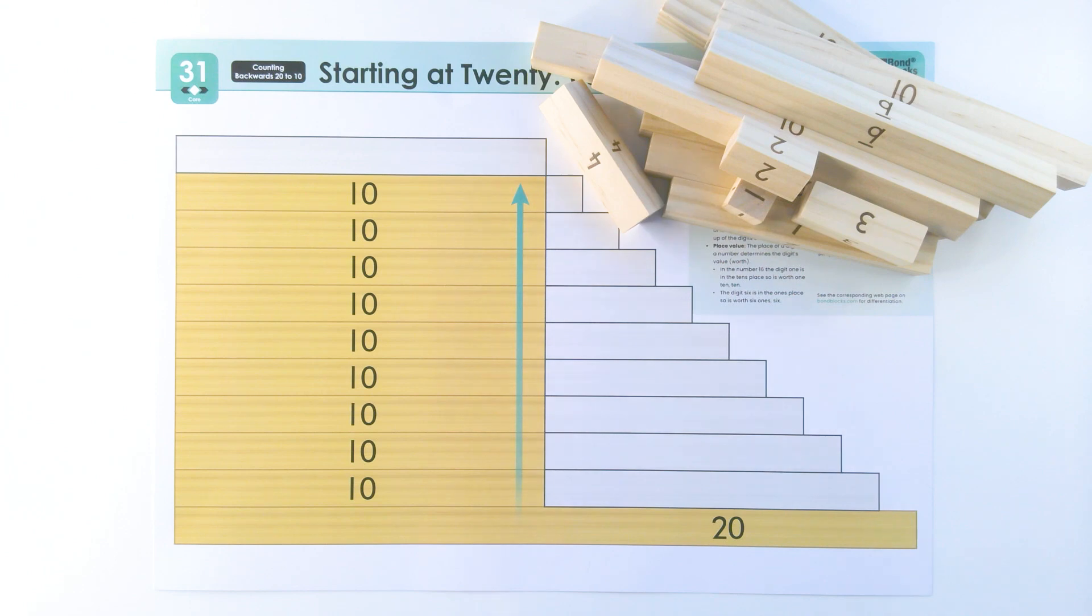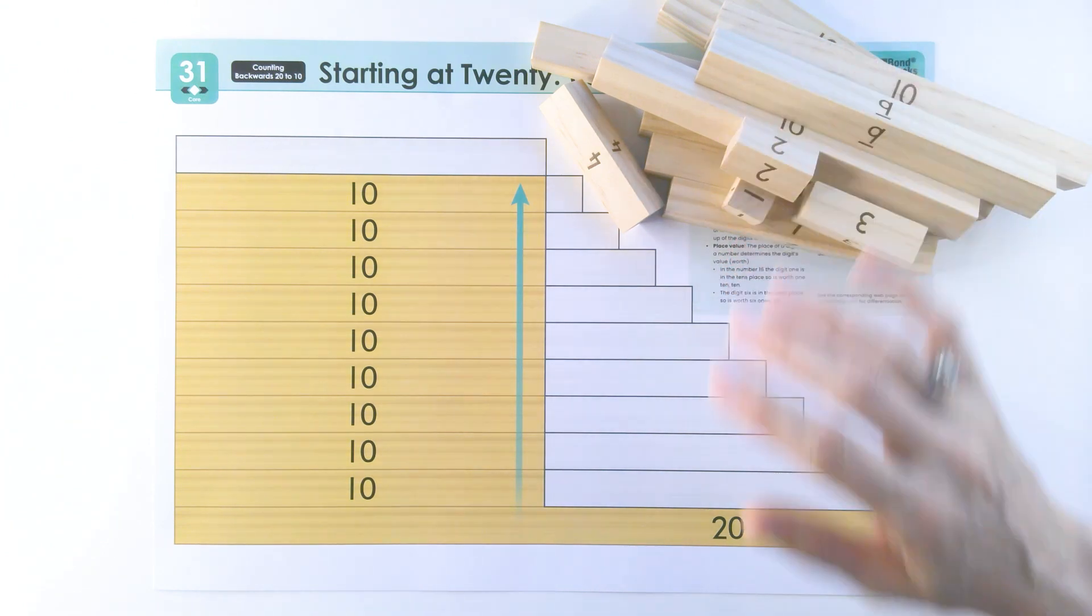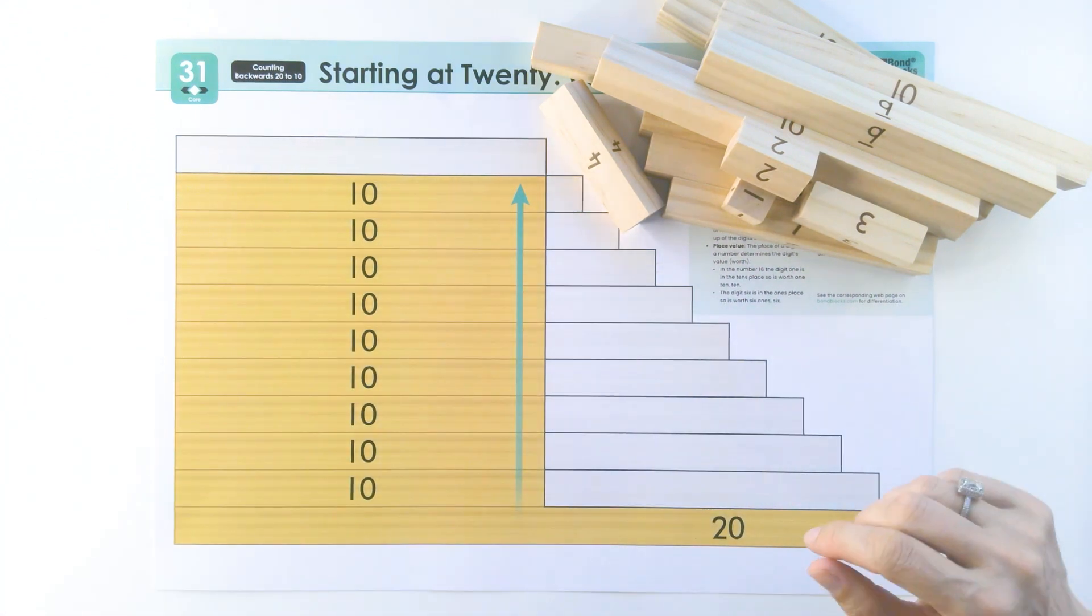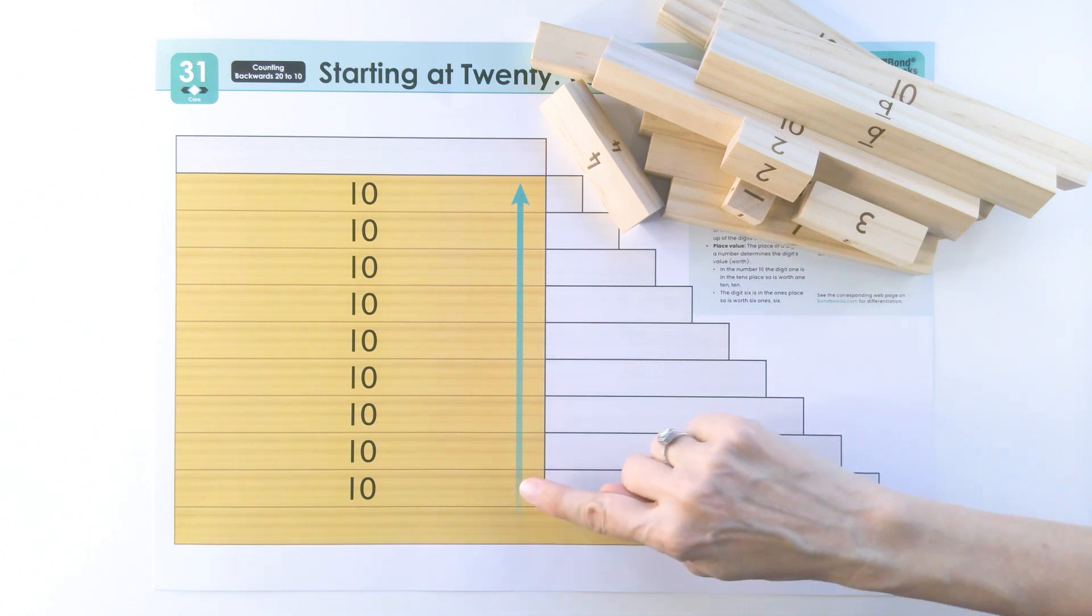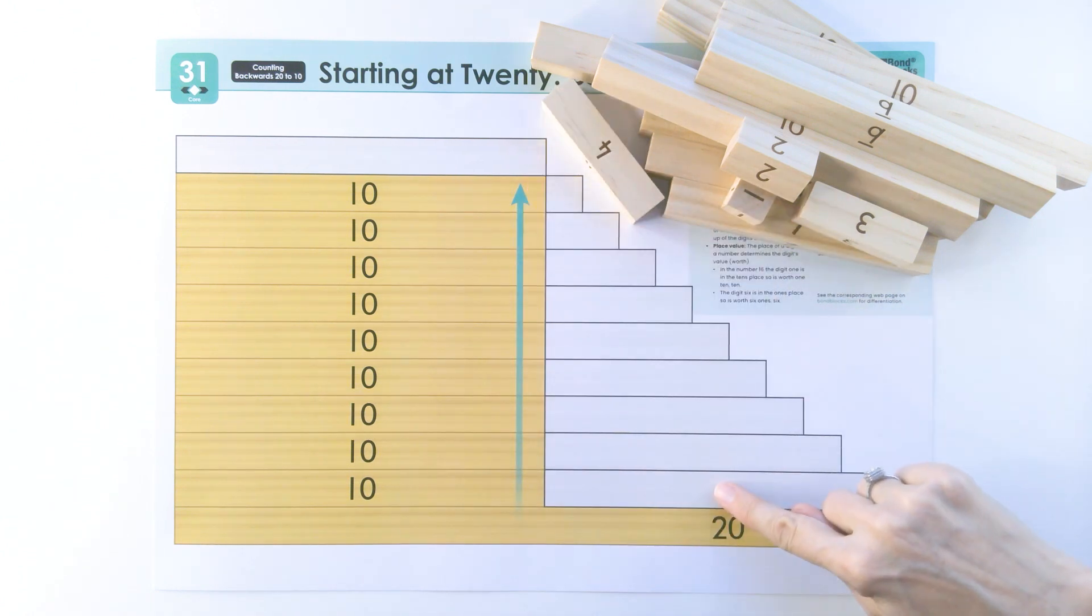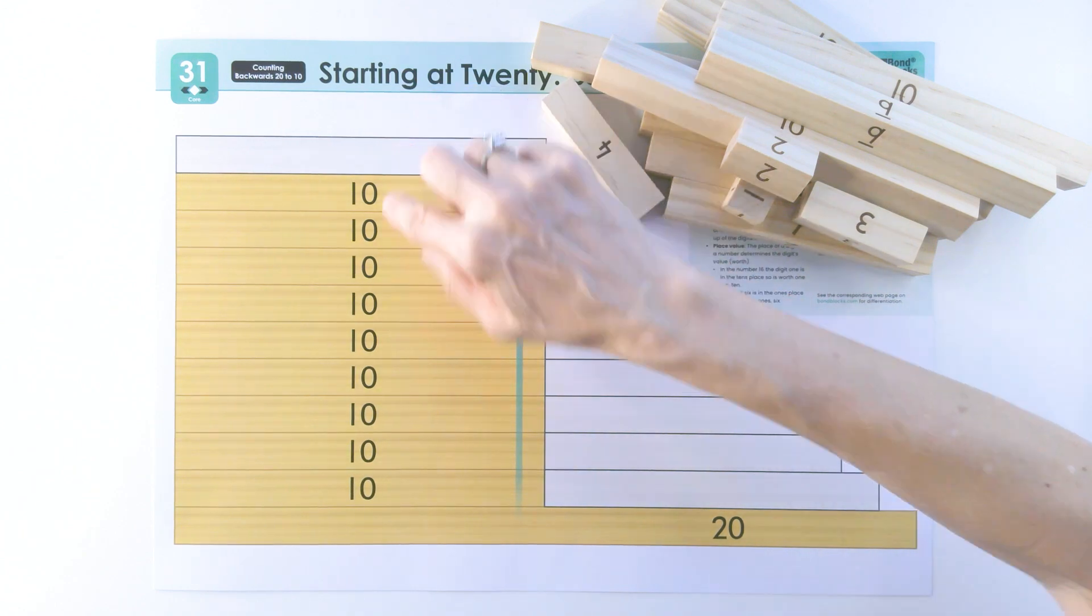To complete this activity you need one of each block from 1 to 10 in a jumbled pile. I've got Felicity here with me. Do you want to wave? Felicity, you're player one so you're going to fill the set of steps, but because we're counting backwards you're going to start with the longest block, the nine, and then fill to the shortest block. You will then have the 10 to do at the end.